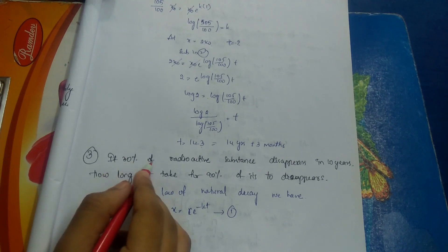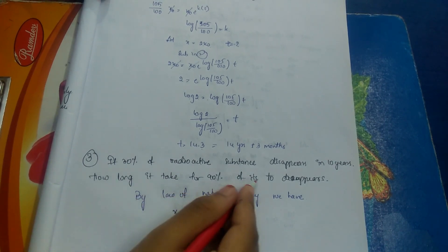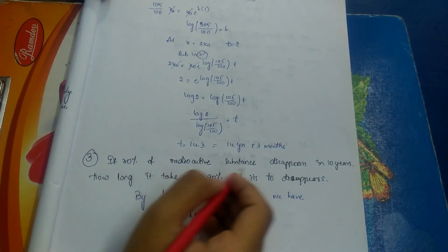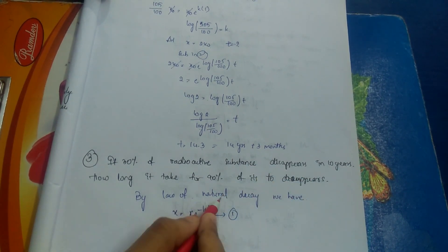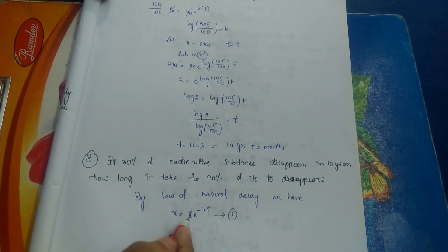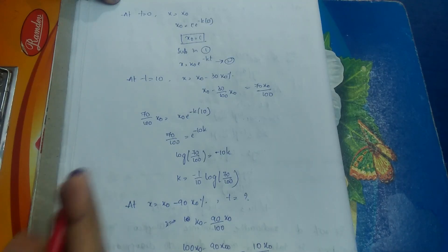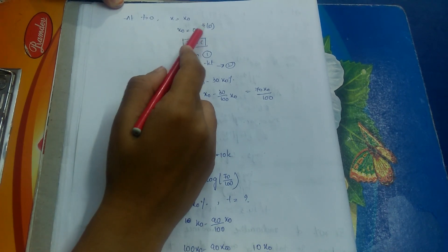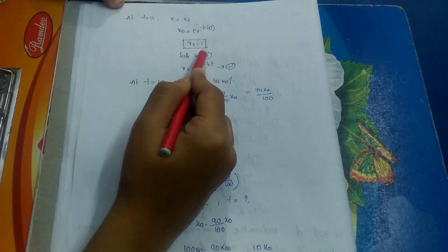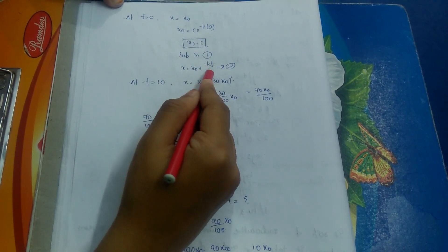Third question: if 30% of a radioactive substance disappears in 10 years, how long does it take for 90% to disappear? Since the substance is decreasing, we use the law of natural decay: x = c · e^(−kt). Let this be equation 1. At t = 0, x = x₀, so x₀ = c · e^0, giving c = x₀. Substituting: x = x₀ · e^(−kt). Let this be equation 2.